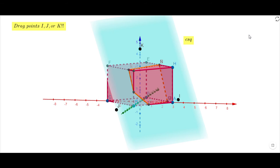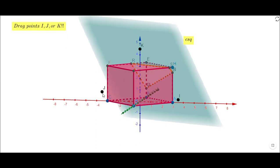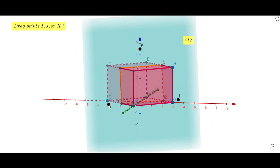You get different cross sections. You can also try to move K, which is right here, and see what you get.